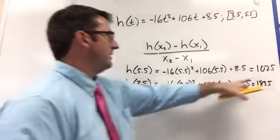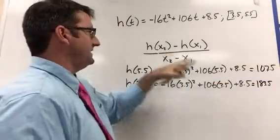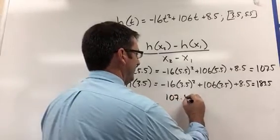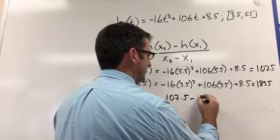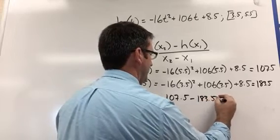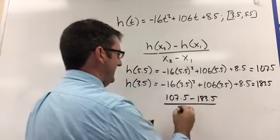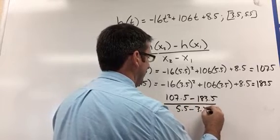All right, so now let's take h(x2), that's 107.5 minus h(3.5), which is 183.5, and divide that by 5.5 minus 3.5.